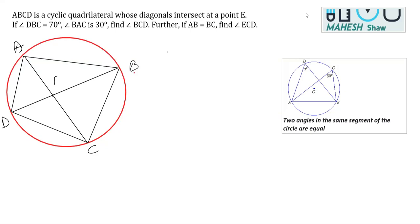We are given that angle DBC is 70 degrees, so this angle DBC equals 70 degrees. We are also given that angle BAC is 30 degrees.